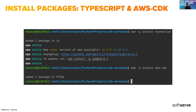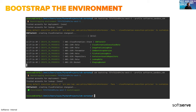Moving on to package installation: you need TypeScript if you want to develop on it, but you can also use other languages, which we'll discuss further. You just need to type two commands — installation of the language you're going to use, and the AWS CDK package. And that's really it. But to prepare the environment, you still need to bootstrap it.